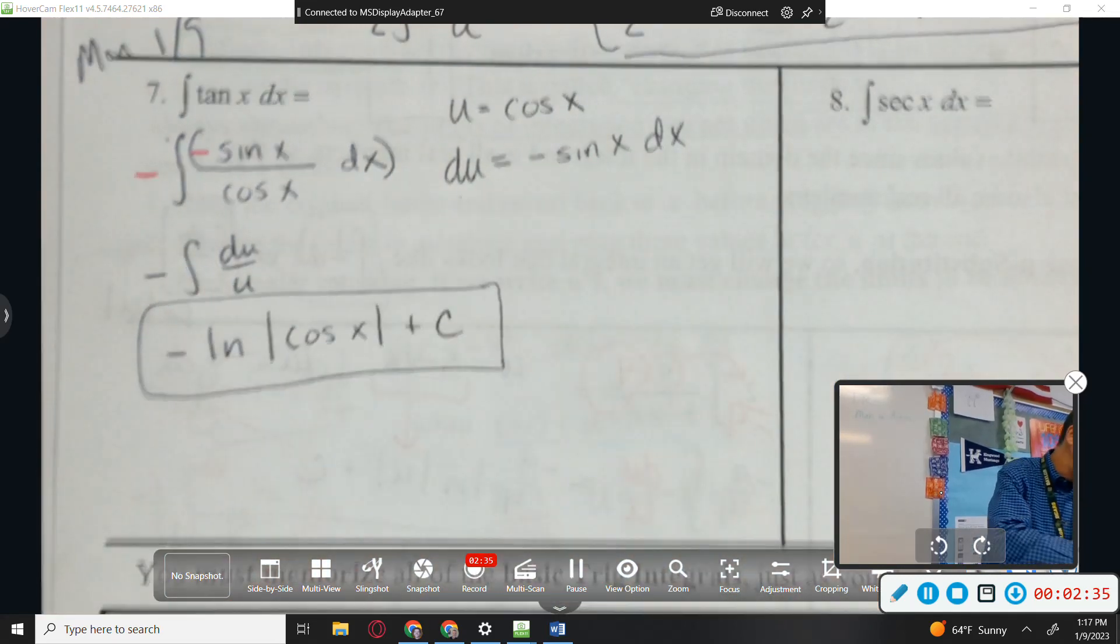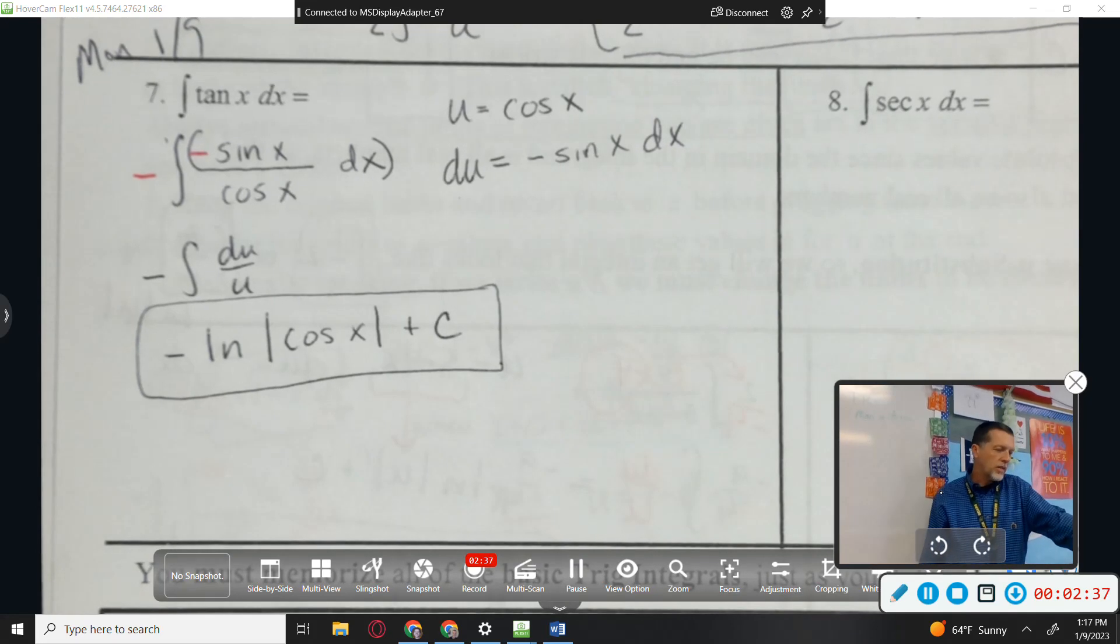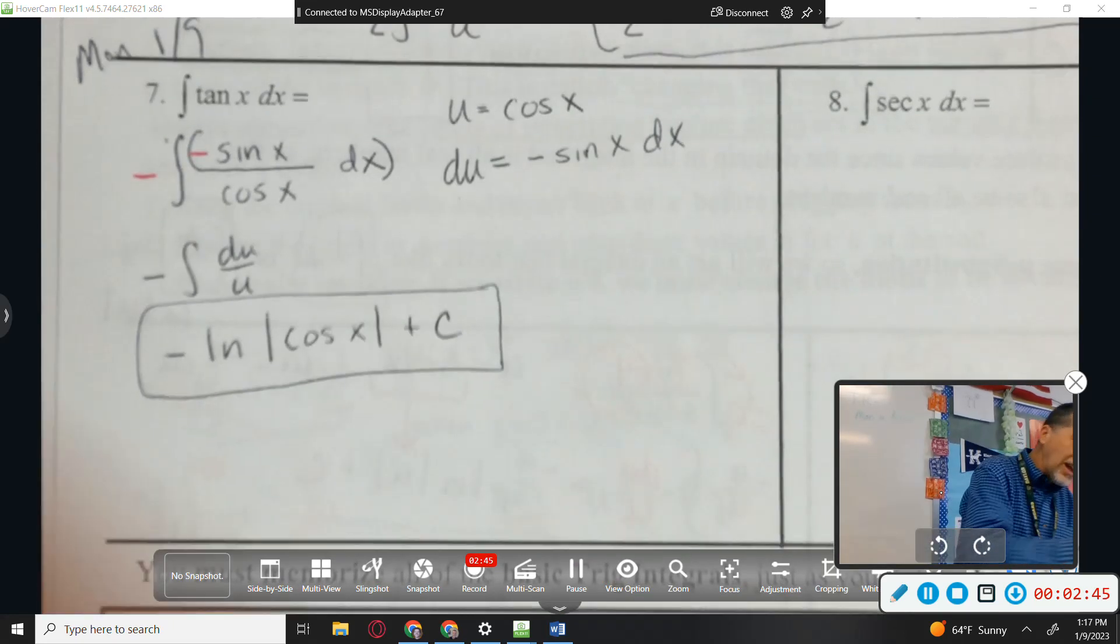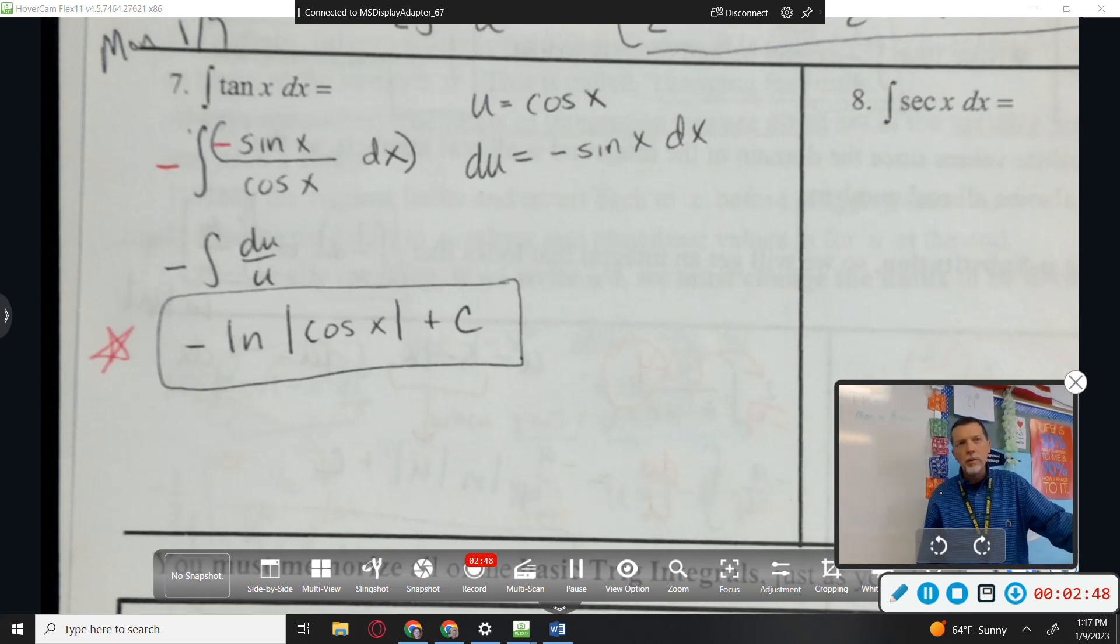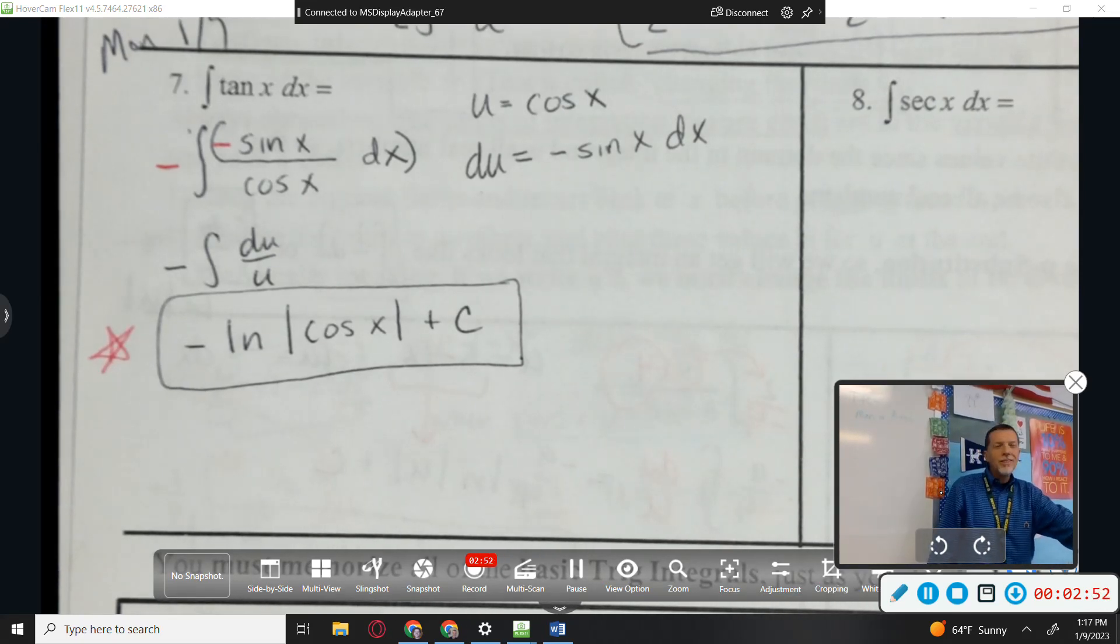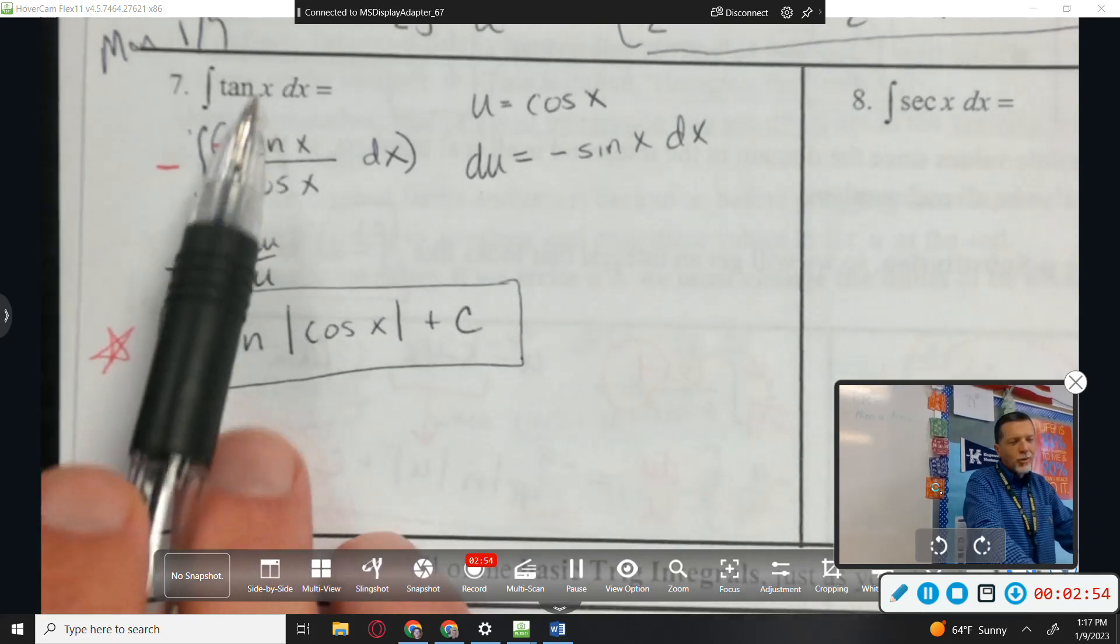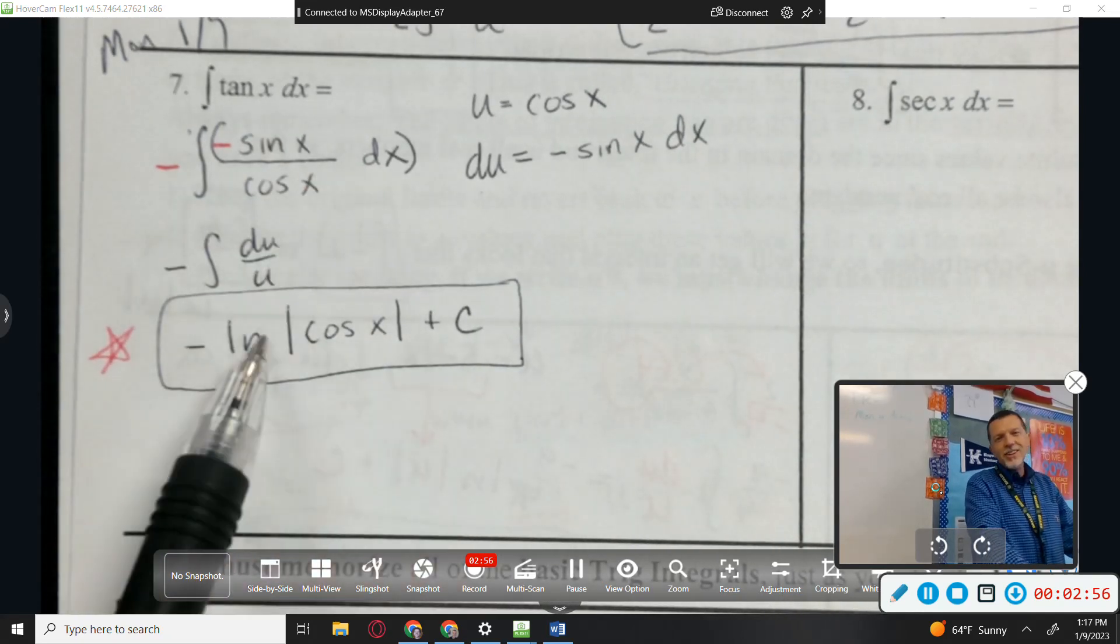Derivative cosine is negative sine. So, it didn't work out perfectly, but the negative is an easy fix. So, DU is in the top. U is in the bottom. And it's like, oh, we've done this three times already today. And a bunch of times on Friday. So, the antiderivative of DU over U is natural log of U. I'm going to go ahead and replace U with cosine plus C.